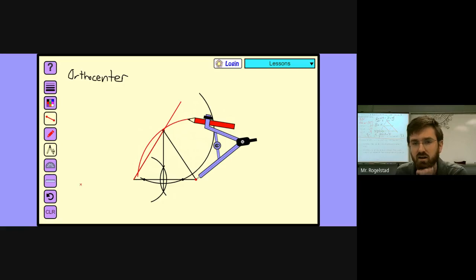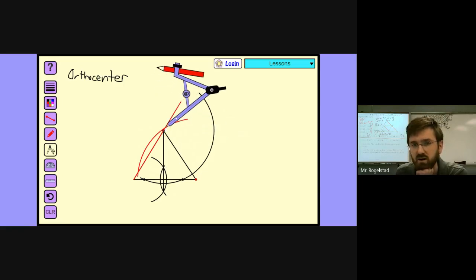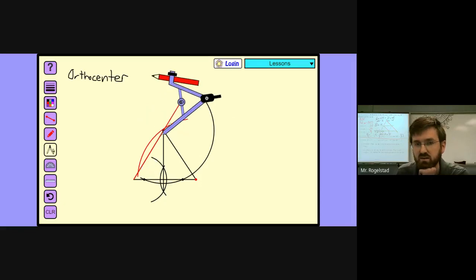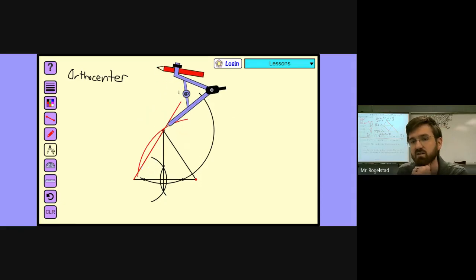And now I have a spot where it crosses the line twice. So here and here is where the arc crosses the side twice.